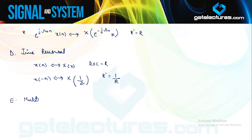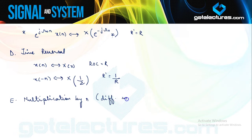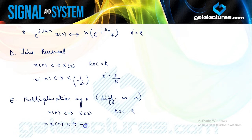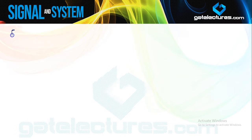The next property is multiplication by n. When you multiply a signal by n in the time domain, it results in differentiation in the z-domain. If X(z) is the Z-transform of x(n), then the Z-transform of n·x(n) is −z·dX(z)/dz, with ROC remaining the same.